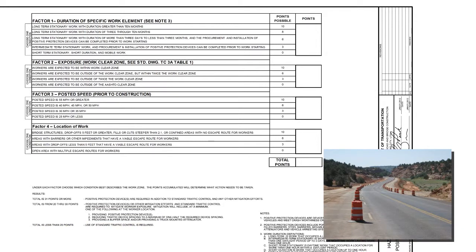Let's take a look at the scenario as shown on the shoulder widening operation photograph. This project will take up to a month to complete. Knowing the project will take a month, we will choose long-term stationary work with duration of more than 3 days to less than 3 months. This will give us 6 points.